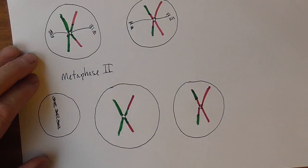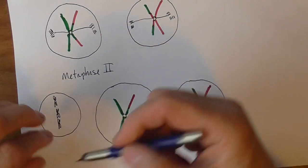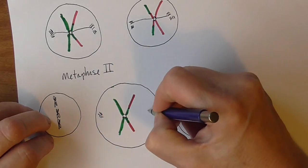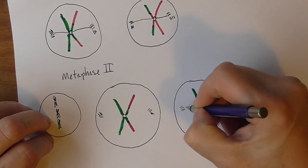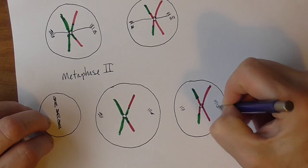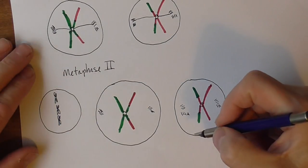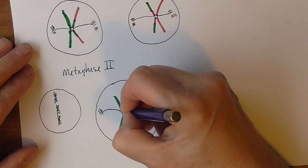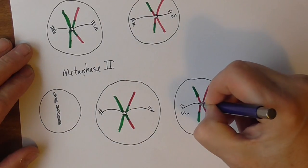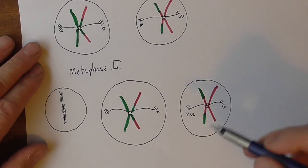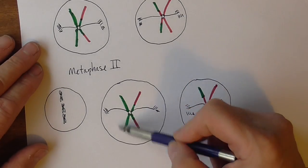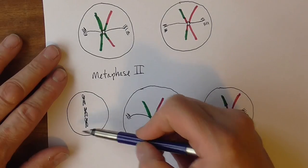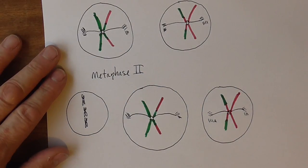So the tetrads line up and the spindles become fully formed and connected from the centrioles. So this is one of the 23 that are lined up along the equatorial plane of the cell. They line up.